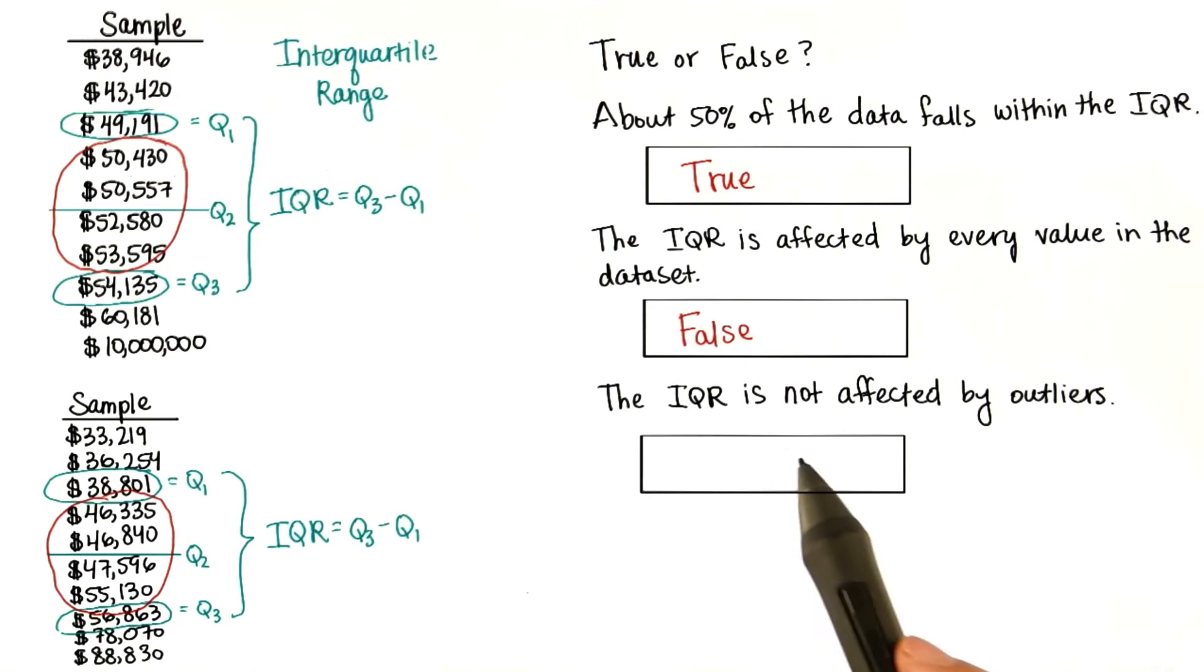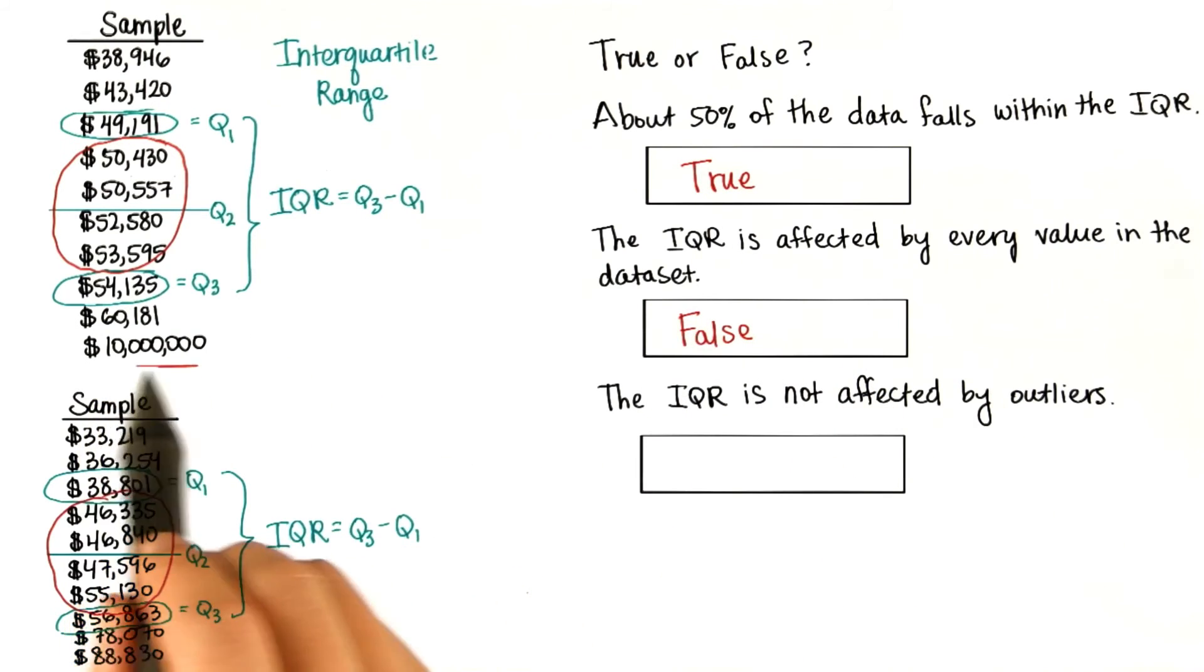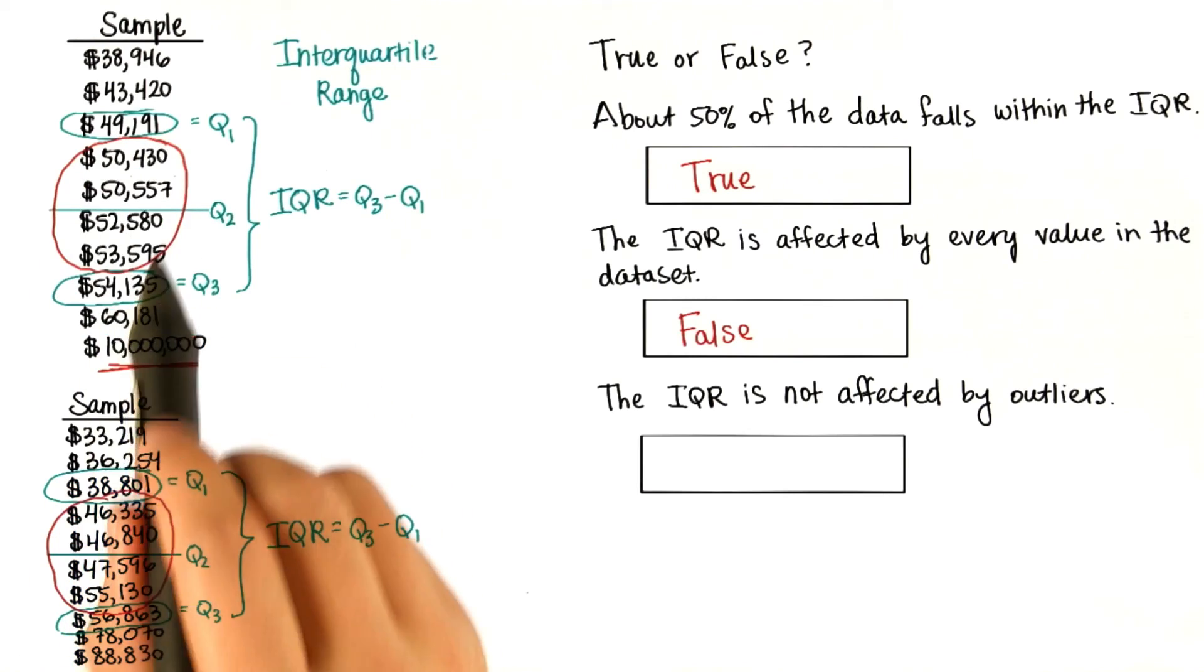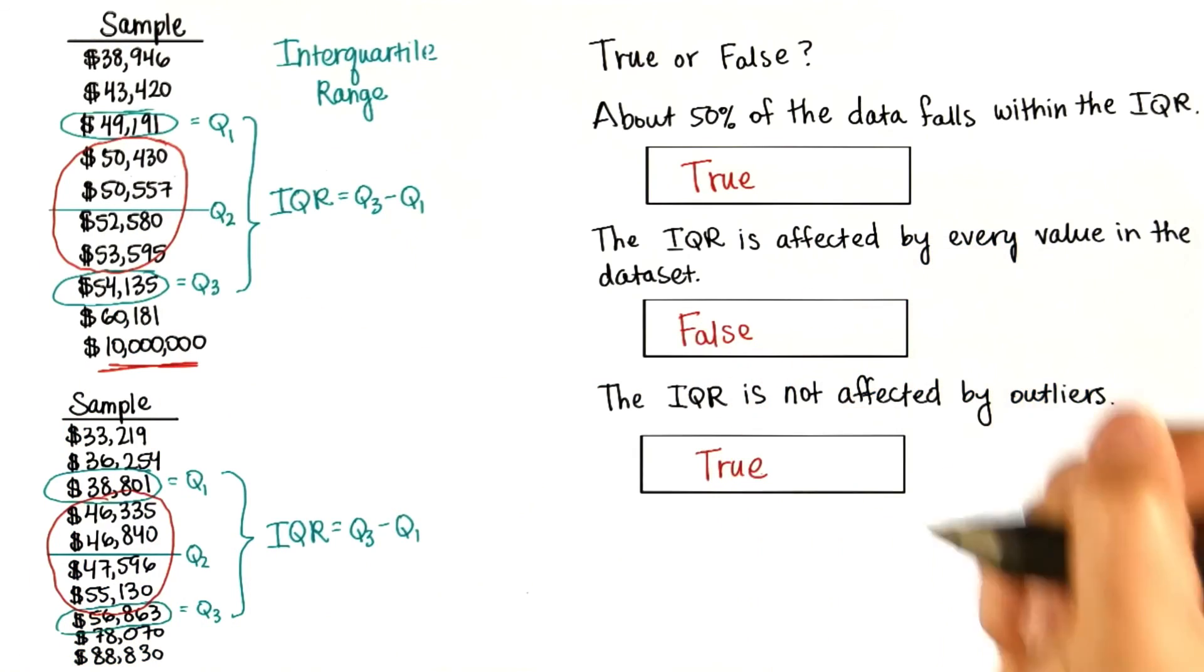And the same concept applies here. We have this outlier, but even if this were something closer to the data set, like 63,000, the IQR would still stay the same. So this one's true.